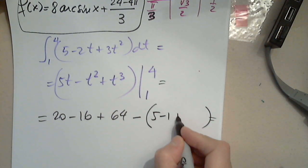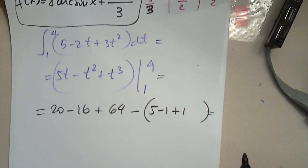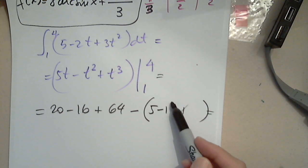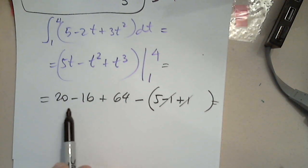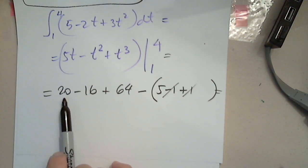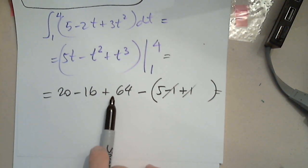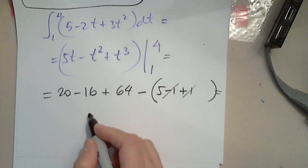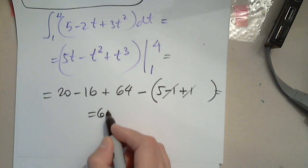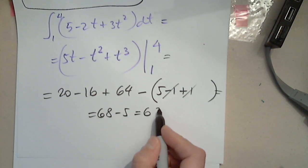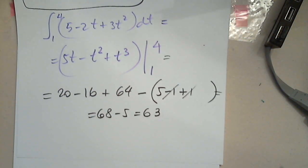So I have 5 minus 1 plus 1 in the parentheses. Those two cancel. Then 20 minus 16 is 4. Four plus 64 is 68. And minus 5 gives 63.